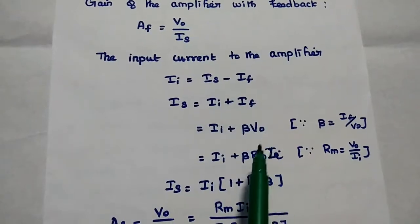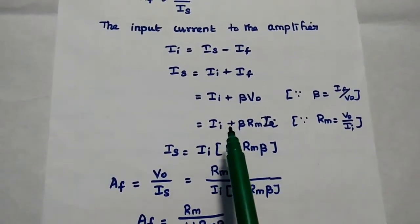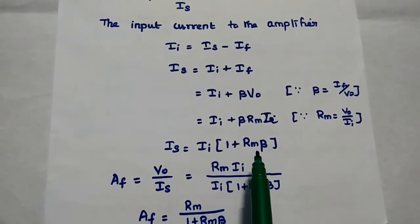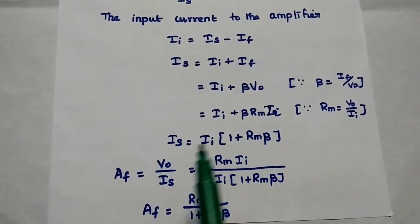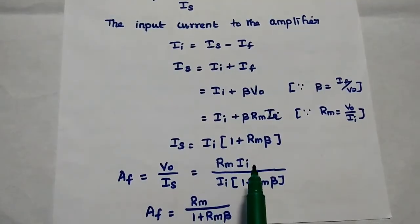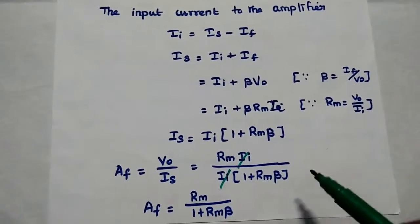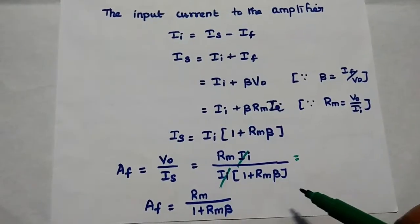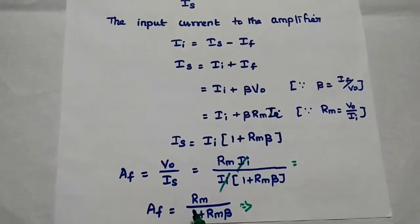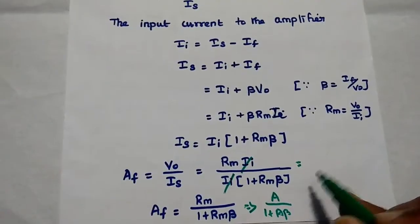The feedback current IF can be replaced with beta into VO, and VO can be replaced with Rm into II. Taking II as a common factor, IS equals II into (1 plus Rm·beta). Substituting this into the gain with feedback formula: AF equals VO divided by IS equals Rm·II divided by II·(1 plus Rm·beta). Since Rm is the gain without feedback, AF equals A divided by (1 plus A·beta).